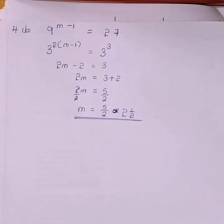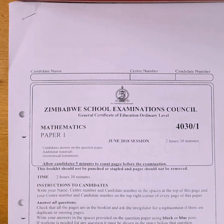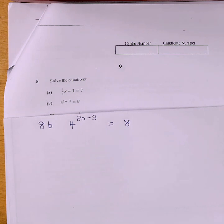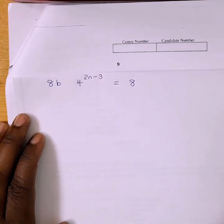That was the complete solution of the exponential equation from November 2015, Maths Paper 2. We now move on to the next question, which was examined in June 2018, Maths Paper 1. The question on exponential equations was number 8b: 4 to the power of (2n minus 3) equals 8. We are supposed to evaluate the value of n, following the same procedure as before.